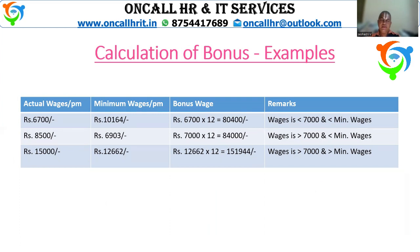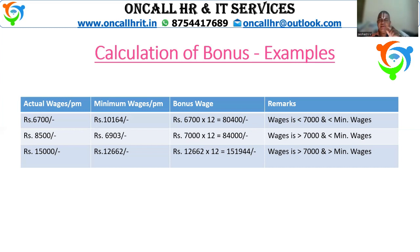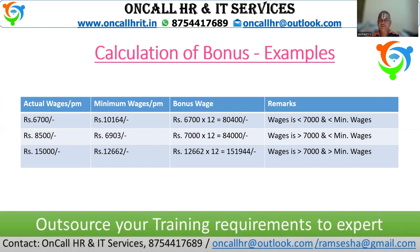In that case, actual wage is less than 7,000 as well as less than minimum wage, so we calculate bonus on 6,700. Next case: actual wage is 8,500, minimum wage is 6,903. Here minimum wages is less than 7,000 and actual wage is more than 7,000, so we take 7,000 for calculation. Third case: actual wage is 15,000, minimum wage is 12,662. Both are higher than 7,000, so we calculate based on minimum wages — 12,662.